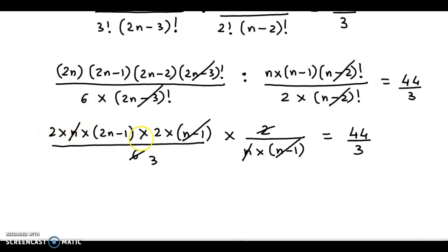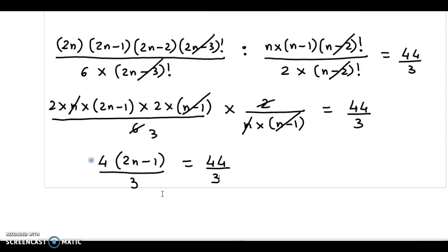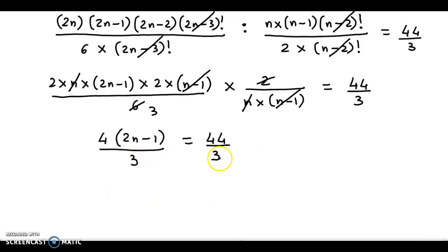Now here you have 2×2, so that's 4×(2n-1) divided by, in the denominator we have 3. On the right hand side, we have 44 divided by 3. Now if you multiply by 3 on both sides, the 3 gets cancelled out.